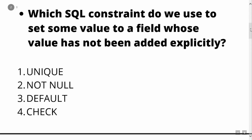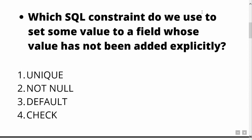As always, we begin with a warm-up question which is a small quiz. Today's quiz is: which SQL constraint do we use to set some value to a field whose value has not been added explicitly? The options are: unique, not null, default, and check. If you know the answer, put it in the comment section. If not, watch the video and at the end I will discuss the answer with you. So stay tuned.